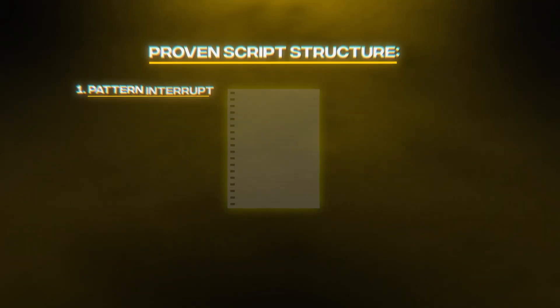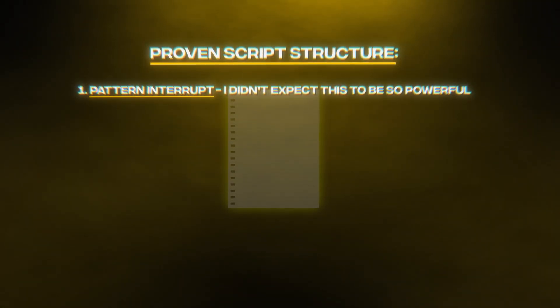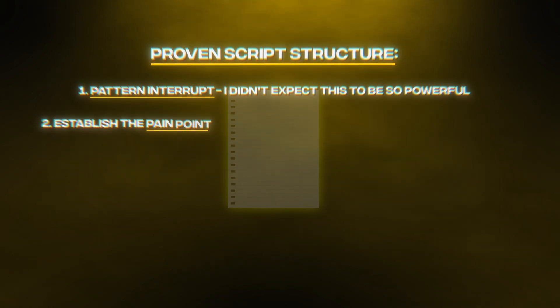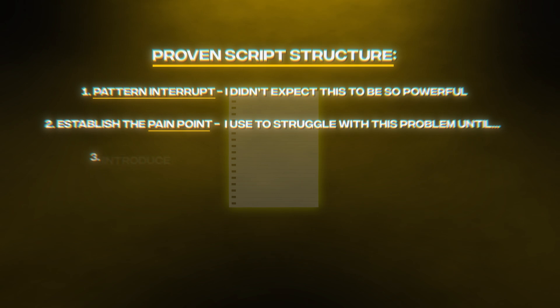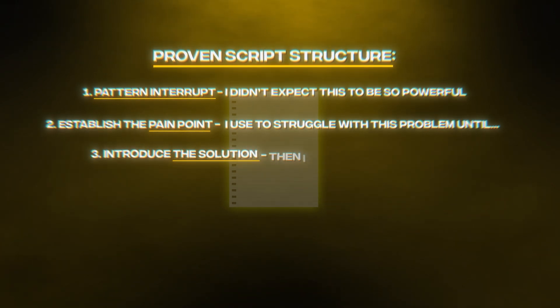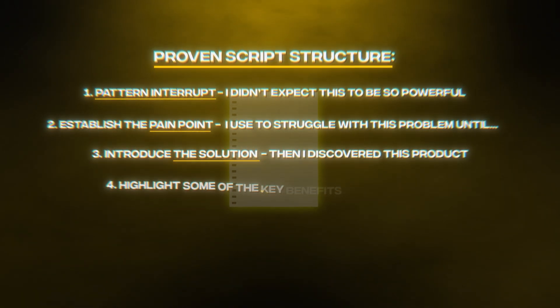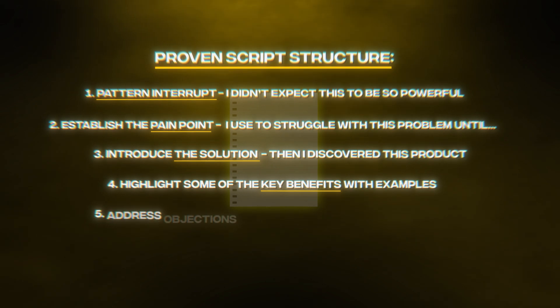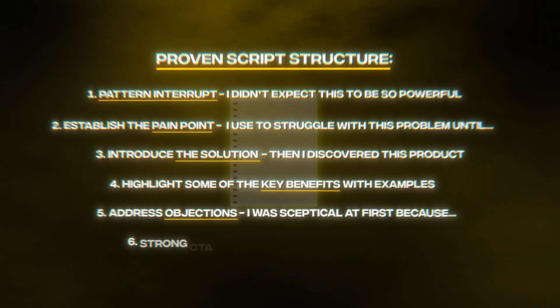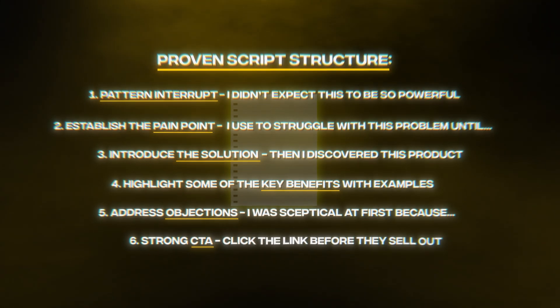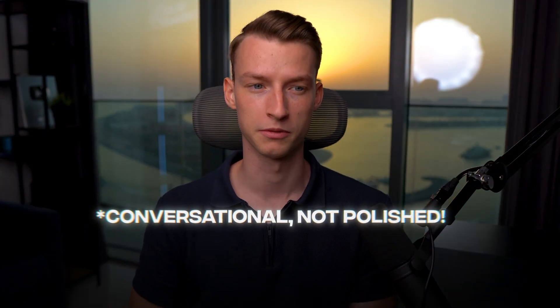Here's a proven script structure to follow. First, start with a pattern interrupt — for example, 'I didn't expect this to be so powerful.' Second, establish the pain point: 'I used to struggle with this problem until...' Third, introduce the solution: 'Then I discovered this product.' Fourth, highlight key benefits with examples. Fifth, address objections: 'I was skeptical at first because...' And sixth, have a strong call to action — for example, 'Click the link before they sell out.' The script should sound conversational, not polished, and include natural phrases to make it feel more human.